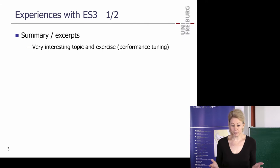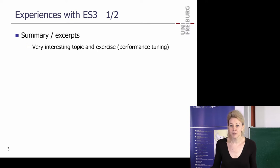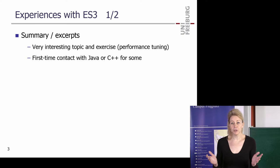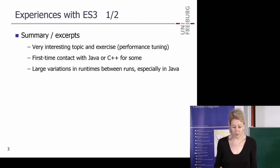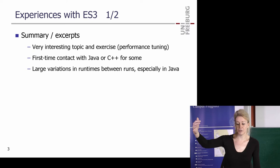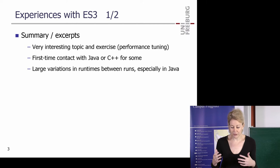Let's first talk about the last exercise sheet, which was implementation-heavy again. Many of you liked the topic — it was about performance tuning, both algorithmic and non-algorithmic. It was interesting to see what you could achieve through performance tweaks: caching effects, branch prediction, and better algorithms. Python was disallowed since efficiency and Python are mostly mutually exclusive, so it was Java or C++. One problem many found with Java is large runtime variations — you run it once, you get a runtime; run it again, it's 20 times faster or slower. I think next time we'll give more precise instructions.